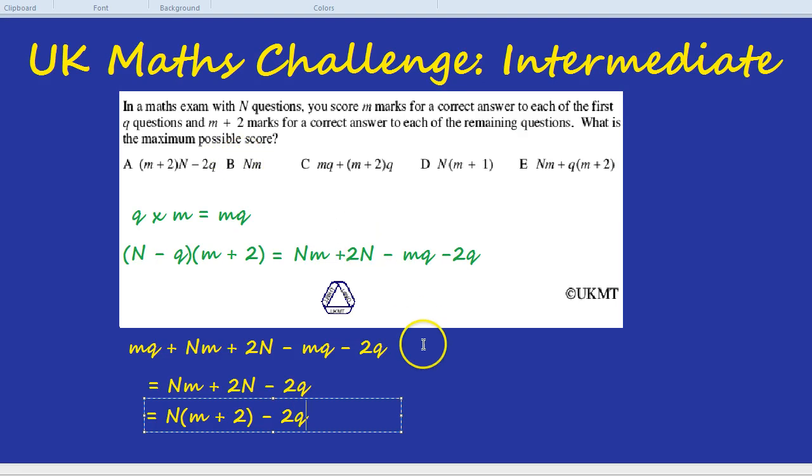And so there we go. We have answer A and we got that by thinking carefully about how many questions we've got, how many marks we'd get for each of them, multiplying it and adding it all up.